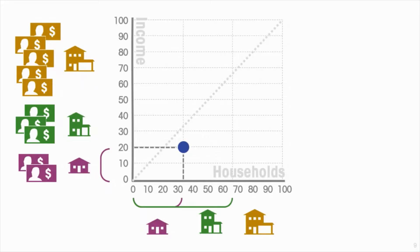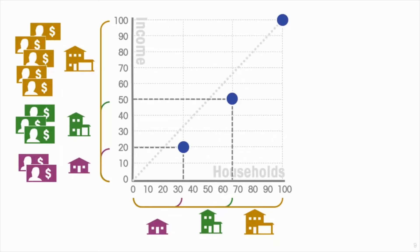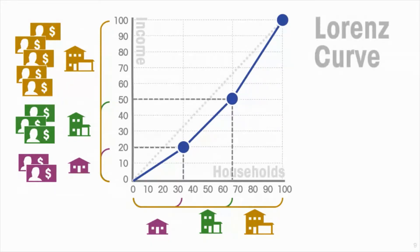Then two-thirds of the households — the poorest two-thirds — earn half the income. We plot that point, and of course 100 percent of the households will earn all the income. If we connect those points, we get a line called the Lorenz curve, named after Max Lorenz, an American economist around 1905.